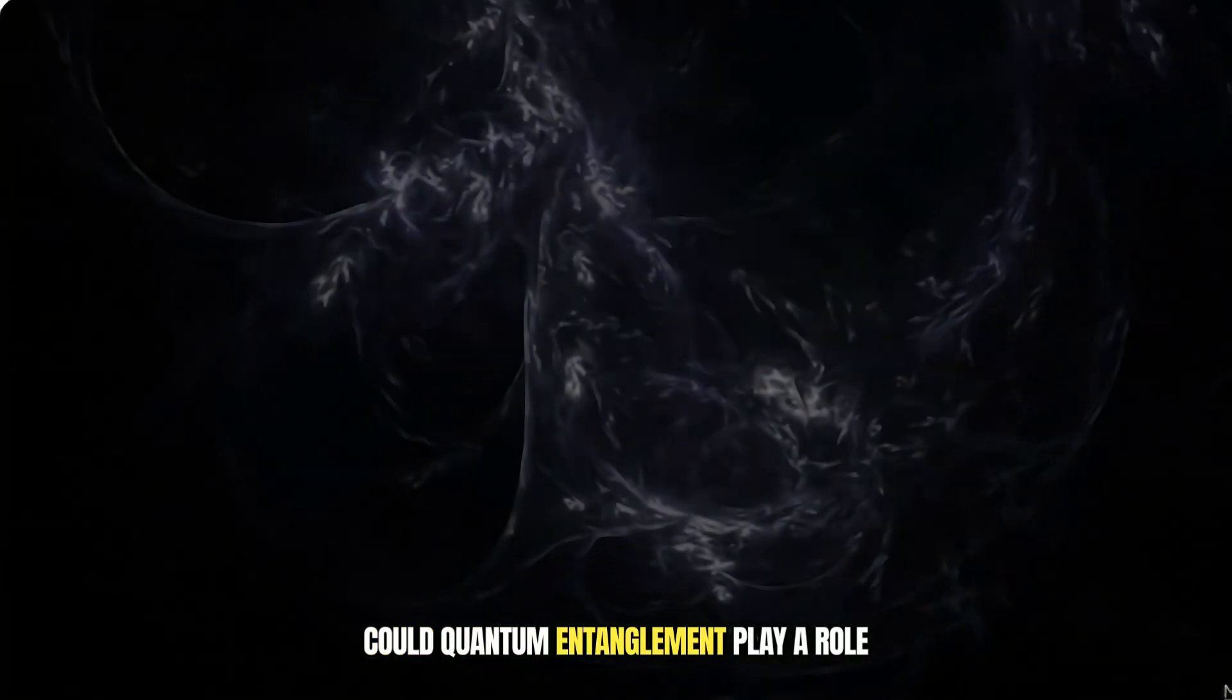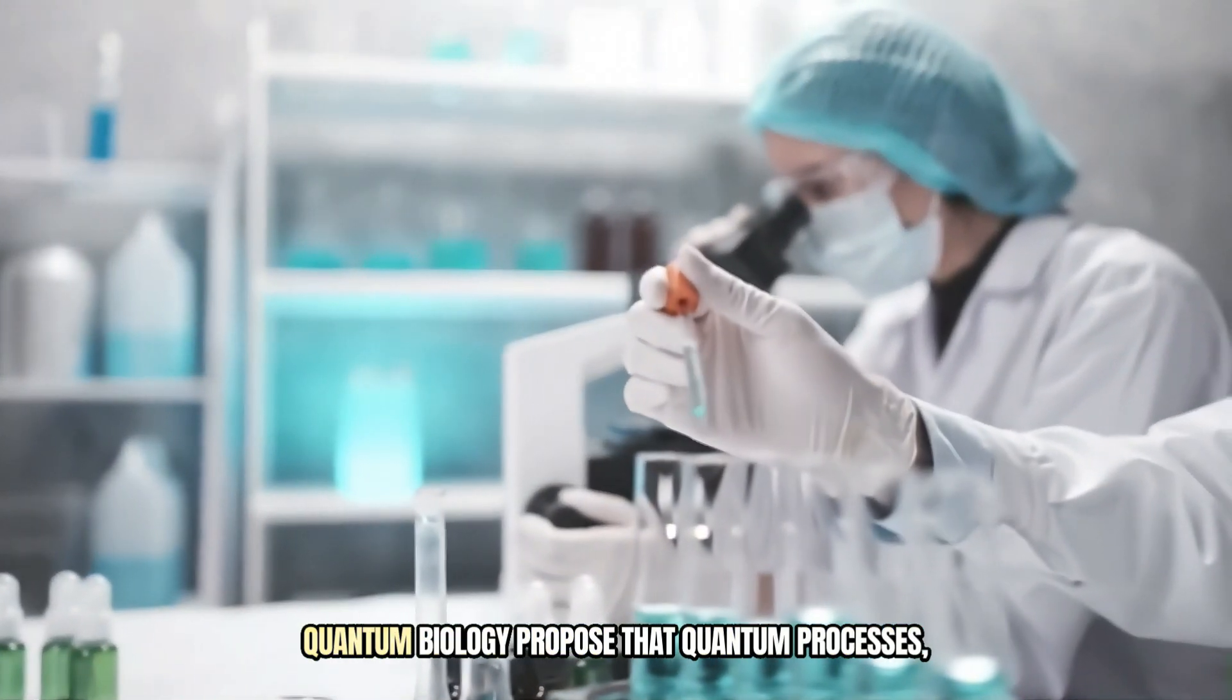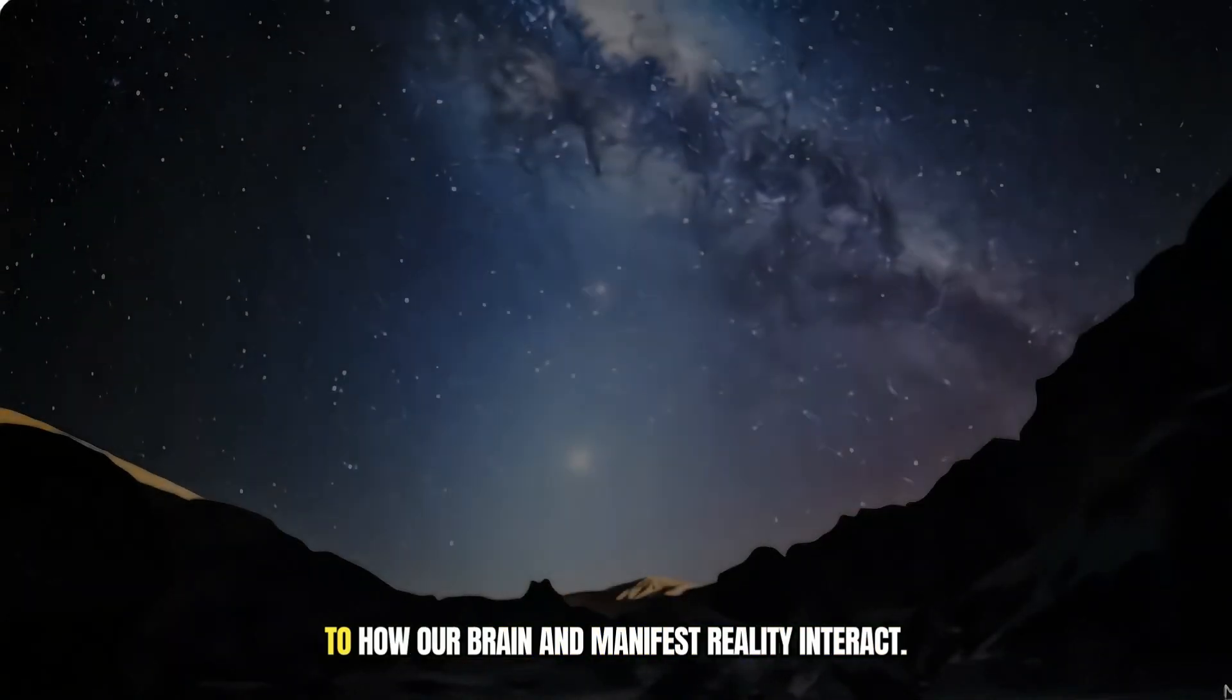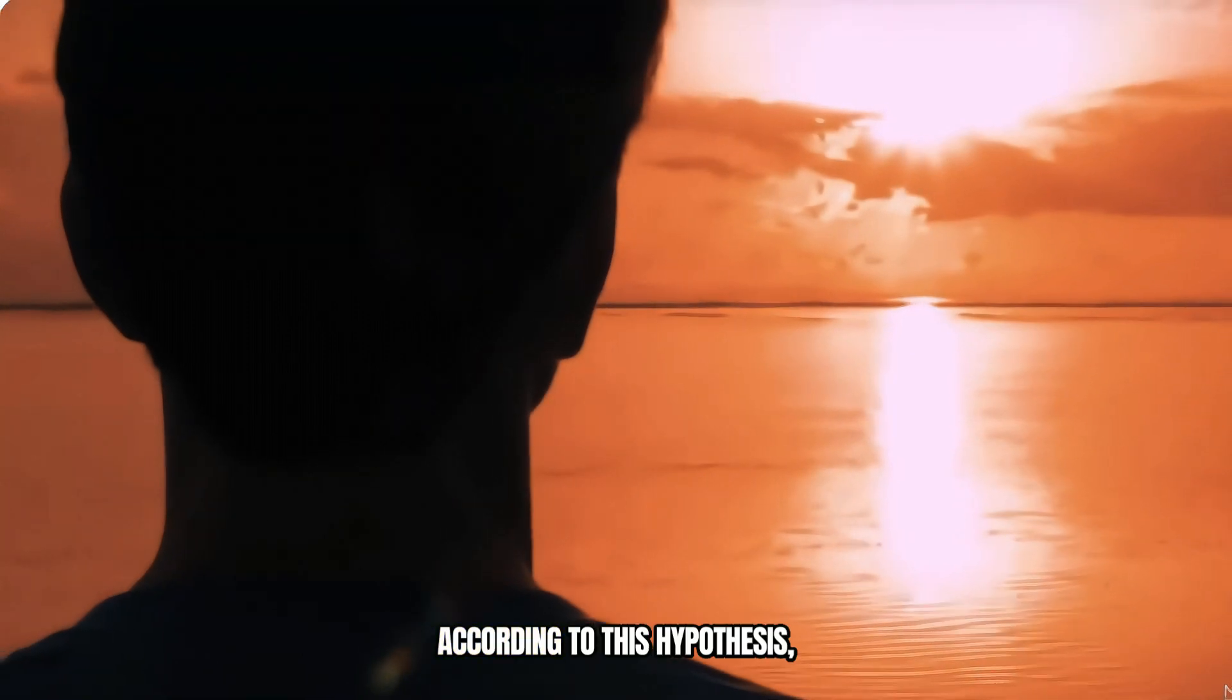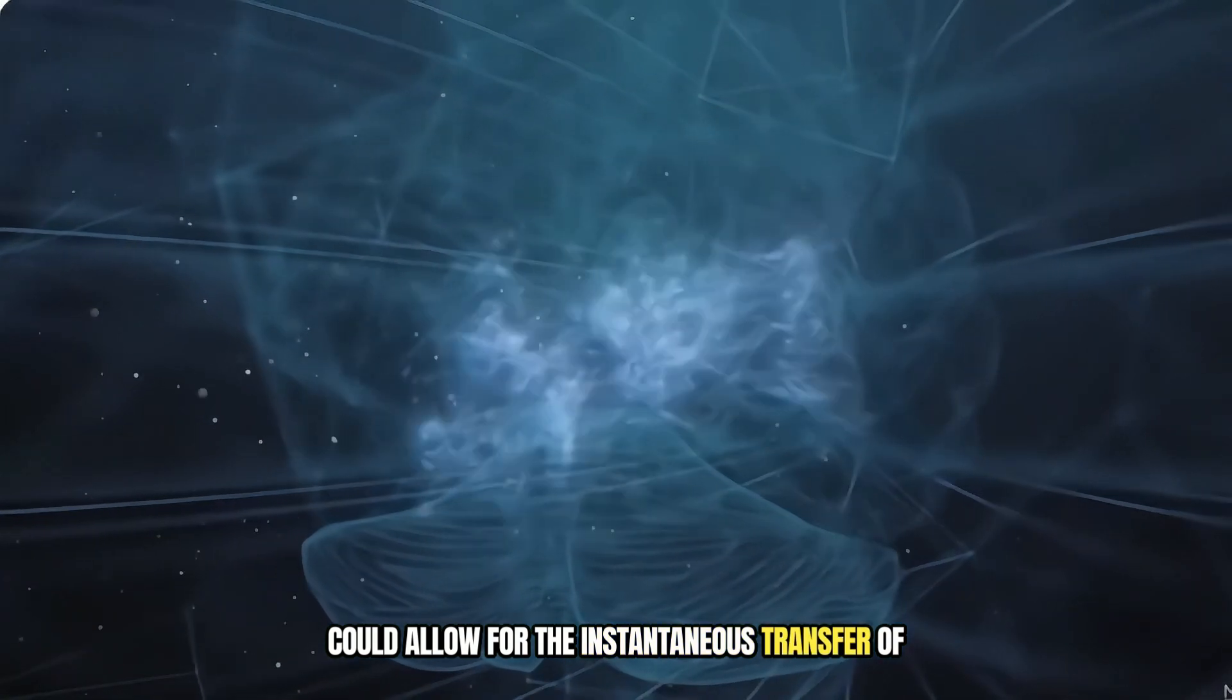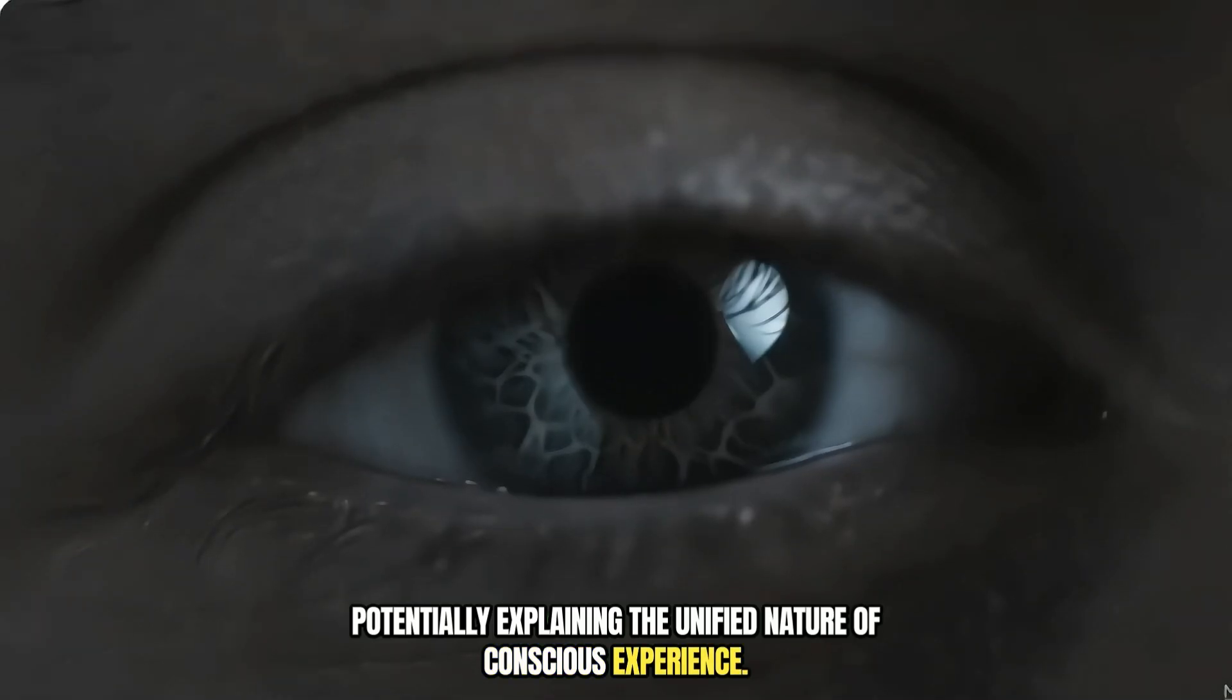This connection between observation and reality leads us to an even more profound question. Could quantum entanglement play a role in generating consciousness itself? Some researchers in the emerging field of quantum biology propose that quantum processes, including entanglement, might be crucial to how our brain and manifest reality interact. According to this hypothesis, quantum entanglement in our neural networks could allow for the instantaneous transfer of information across different parts of the brain, potentially explaining the unified nature of conscious experience.